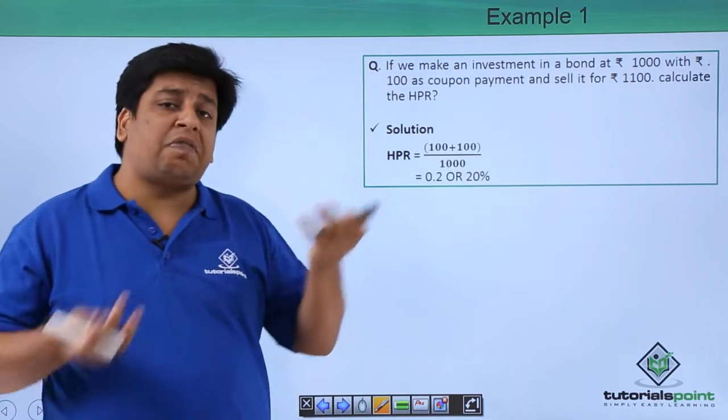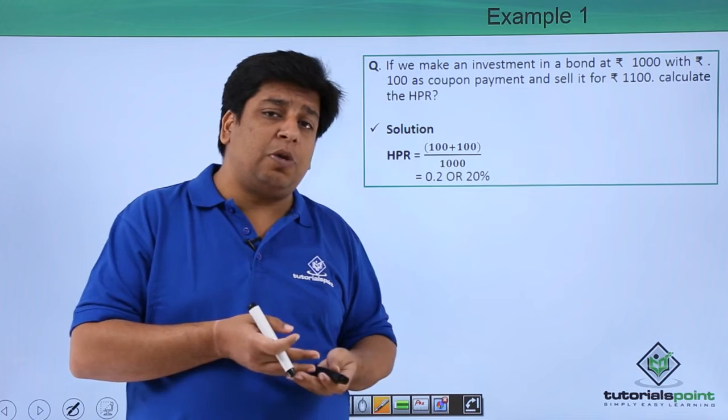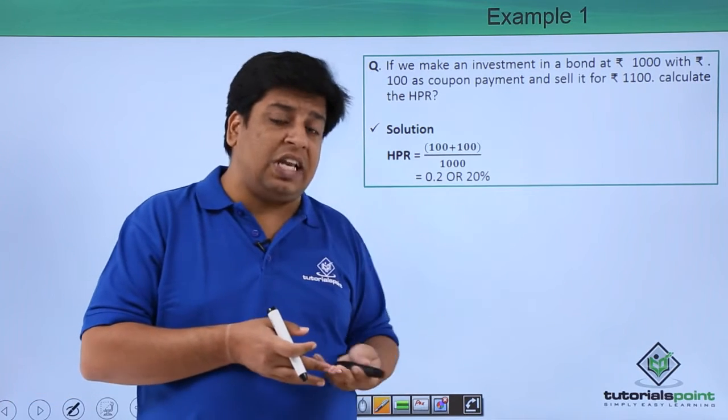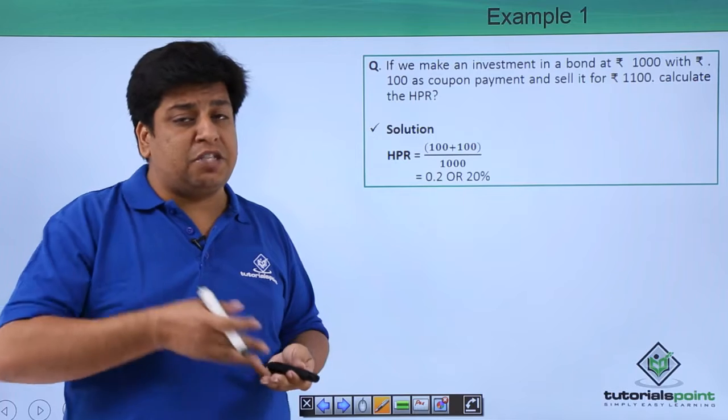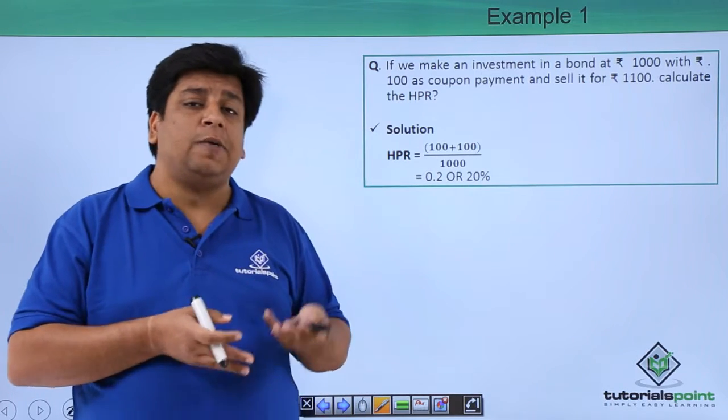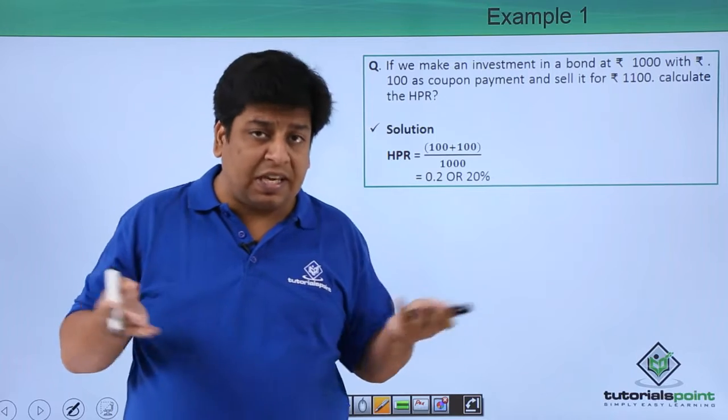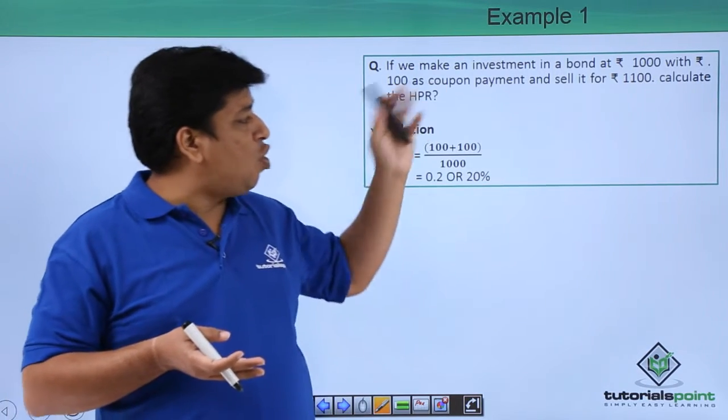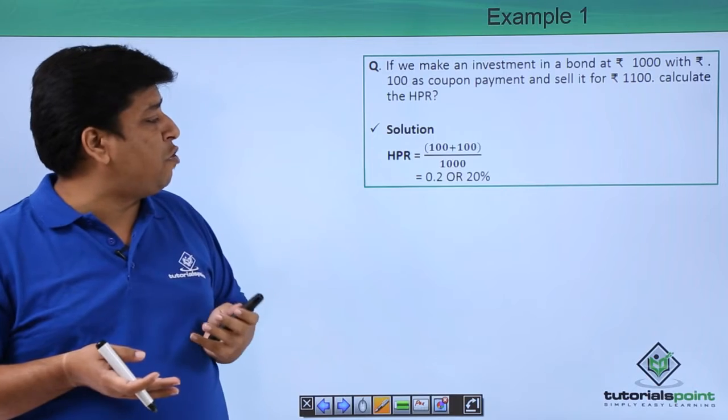The investment we made for this bond was ₹1000. So basically there's a capital gain of ₹100, plus we have also received a coupon of ₹100. So your total earning from this investment is ₹100 plus ₹100, that is ₹200.